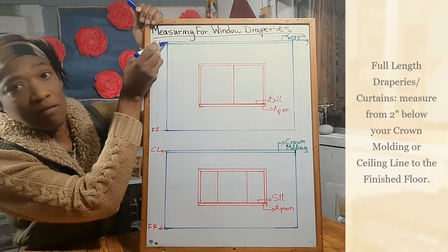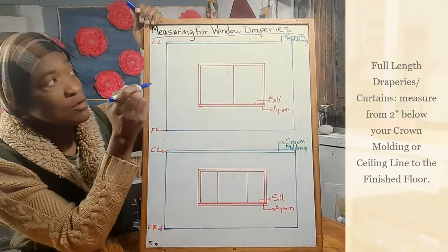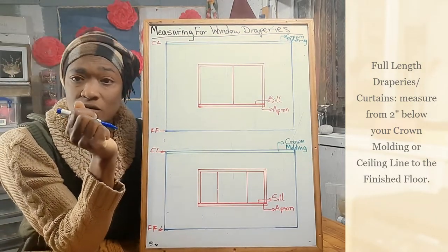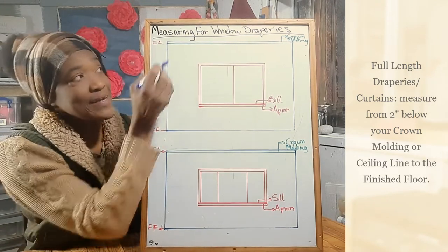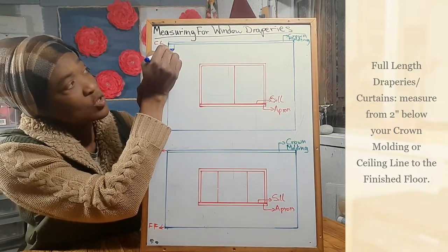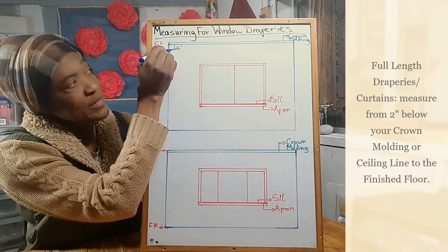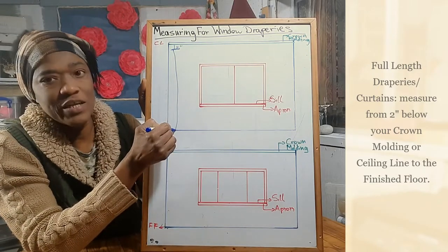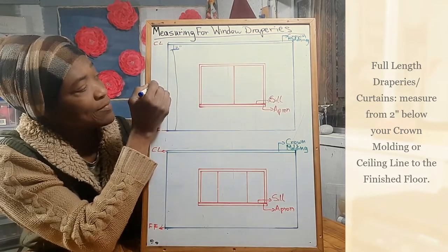So how do we measure for full length draperies? We measure from the ceiling line all the way down to the floor. However, if you have crown moldings, generally speaking you will want to start at least two inches from your crown molding, and then measure all the way down to your finished floor — that would be your full length draperies.